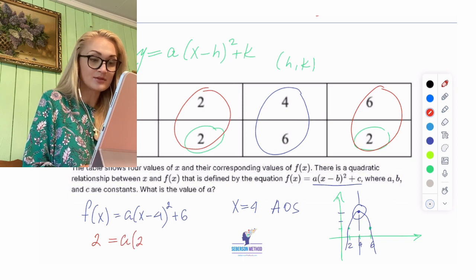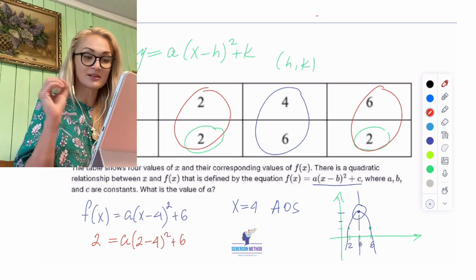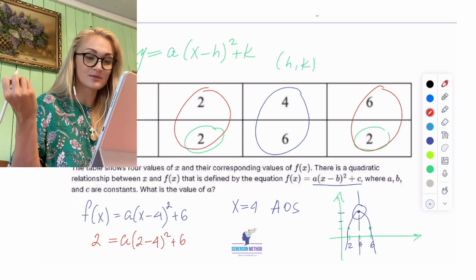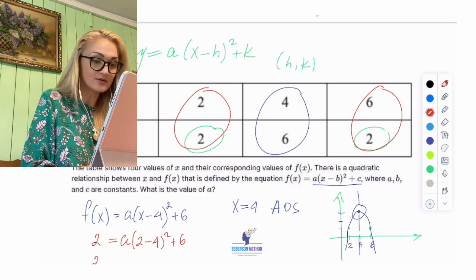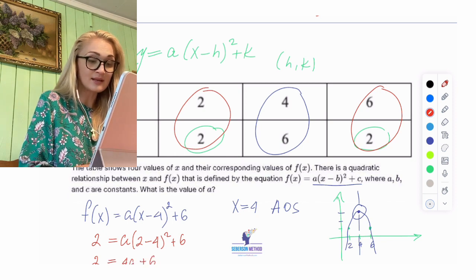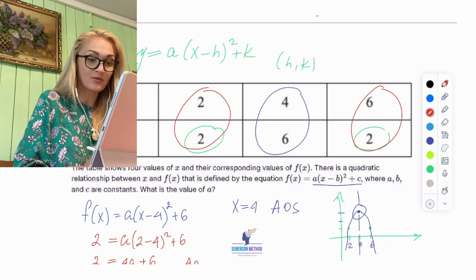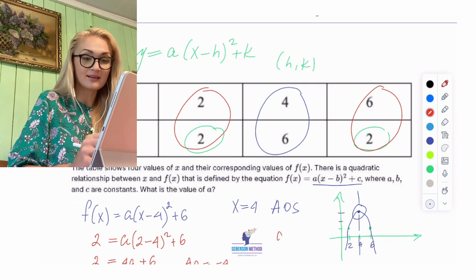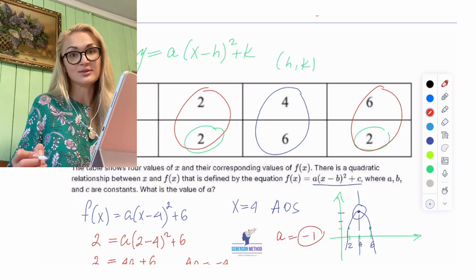When x is equal to 2, y is equal to 2. So we'll say: a times (2 minus 4) squared plus 6 equals 2. Two minus 4 is negative 2, and negative 2 squared is 4. So I have 2 equals 4a plus 6. We subtract 6 on both sides: 4a equals negative 4, so a equals negative 1. Negative 1 is your answer.